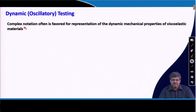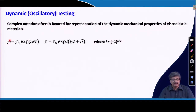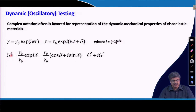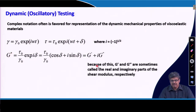A complex notation is often used for the representation of dynamic mechanical properties of viscoelastic materials. In that case, the strain is represented as γ₀·e^(iωt) and the stress as τ₀·e^(i(ωt+δ)), where γ₀ is the maximum strain, τ₀ is the maximum stress, and i is the complex number √(-1). The complex modulus G* can be expressed accordingly, where G′ is called the real component and G″ is called the imaginary part of the shear modulus.